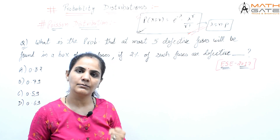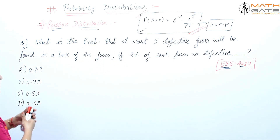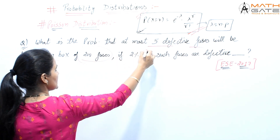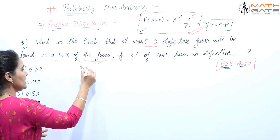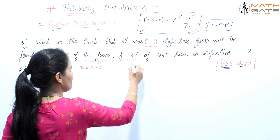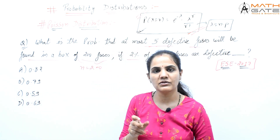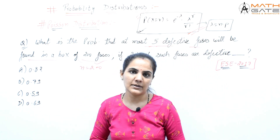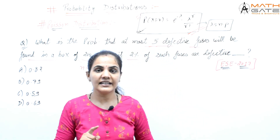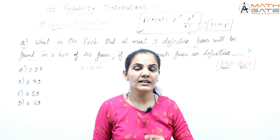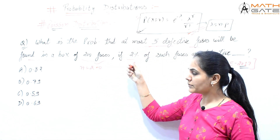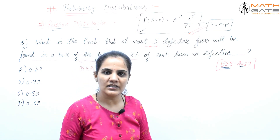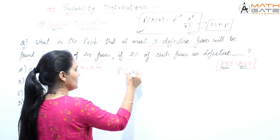Let's discuss one more question from Engineering Service Exam 2017. The question is: what is the probability that at most 5 defective fuses will be found in a box of 200 fuses, if 2% of such fuses are defective? We use Poisson distribution here because n is a large number and the probability of success (defective) is a small number.